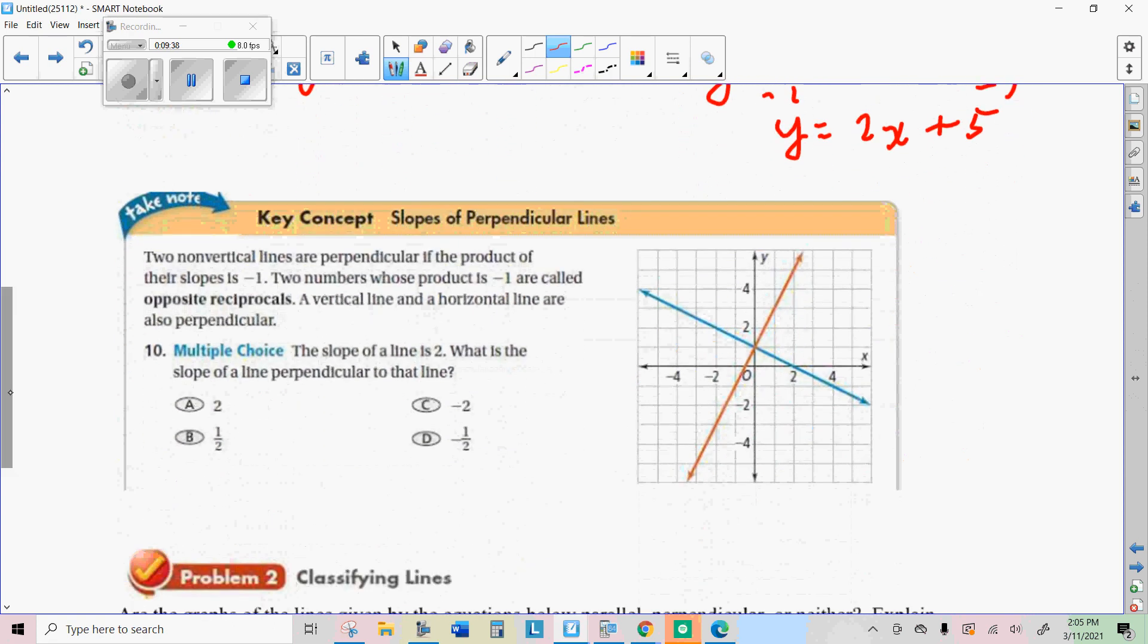The other thing we learned is that perpendicular lines have opposite reciprocal slopes. So if the slope of the line is 2, like this one right here, then a line that's perpendicular, like that blue line, needs to have the opposite reciprocal slope. So I just put a 1 under there so I can flip it. So now it's the reciprocal. Now it's the opposite reciprocal. The answer is D.